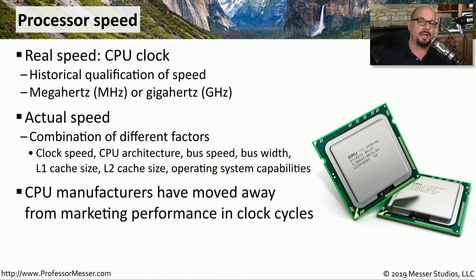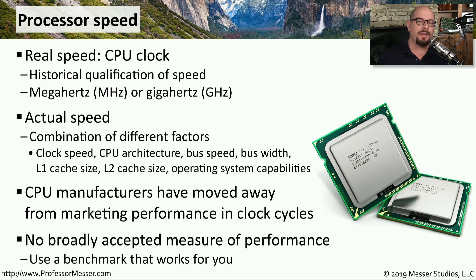This is one of the reasons that computer manufacturers have moved away from promoting processor speed as being equal to overall performance. But this also means there is no broadly accepted single value we can associate with a computer to compare and contrast performance between systems. In reality, you'll want to use a benchmark that works best for you — whether that's high-end transactions across multiple systems, or something more suited to browsing and email.